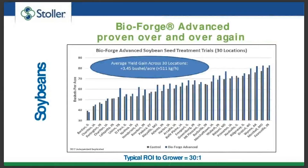As a researcher I always go back to the data. All research data presented here is independent research done through other companies' research divisions and university researchers. In soybean trials with Bioforge Advanced applied at two ounces per hundred weight as a seed treatment across over 30 locations, we've seen a 3.45 bushel per acre increase — fairly statistically consistent just about anywhere we put this product on soybeans. From the grower standpoint it's a low investment with a phenomenal ROI of about 30 to 1.